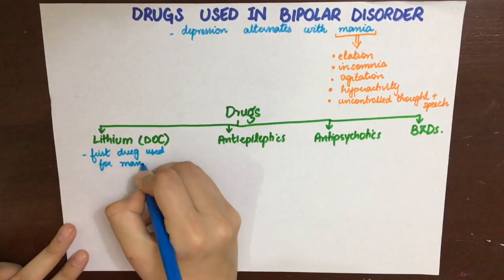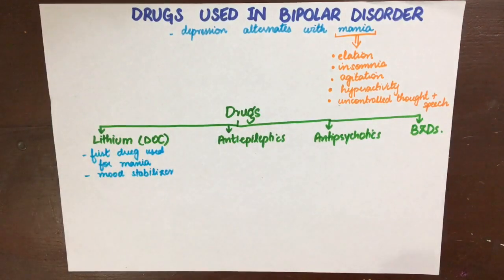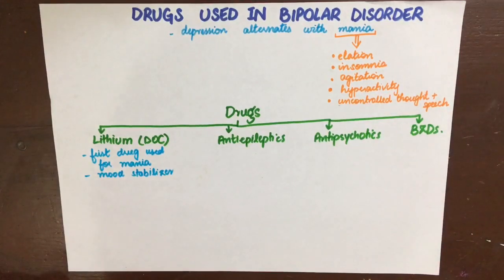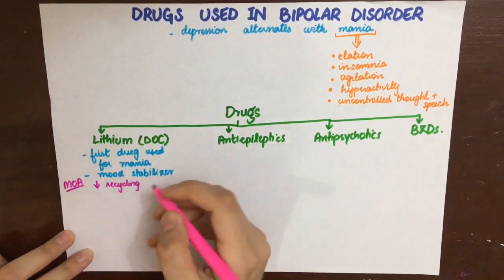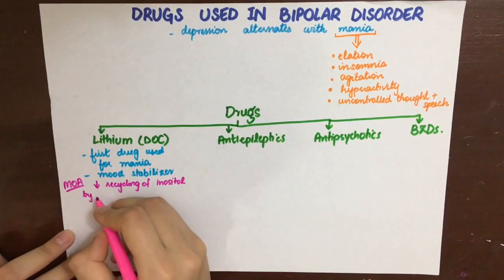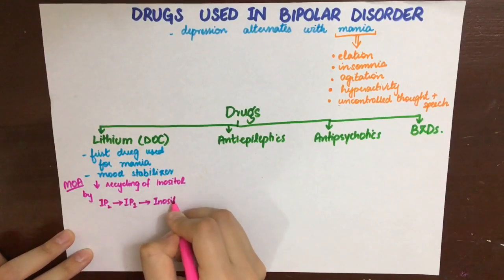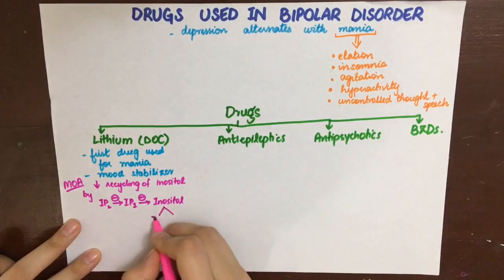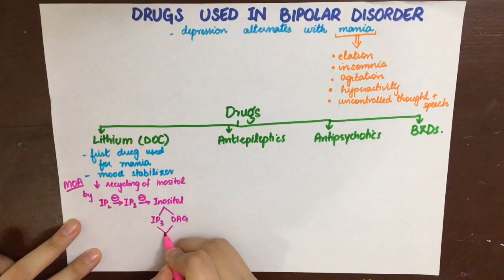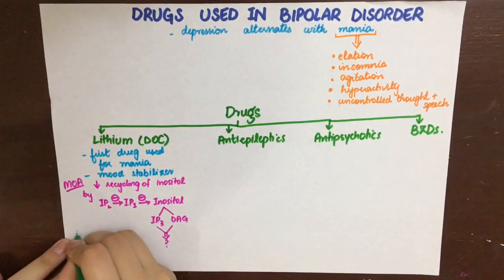Lithium was the first drug ever used for mania treatment. It acts by inhibiting the enzyme inositol monophosphatase, which is responsible for the recycling of inositol used in the IP3-DAG second messenger pathway. This pathway is associated with excitatory receptors such as M1 and alpha-1. As a result, IP2 is not converted into IP1, and IP1 is not recycled into inositol, so inositol is depleted, leading to CNS depression because these are Gq-coupled excitatory receptors.